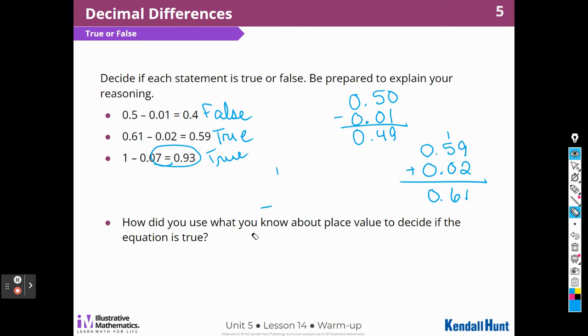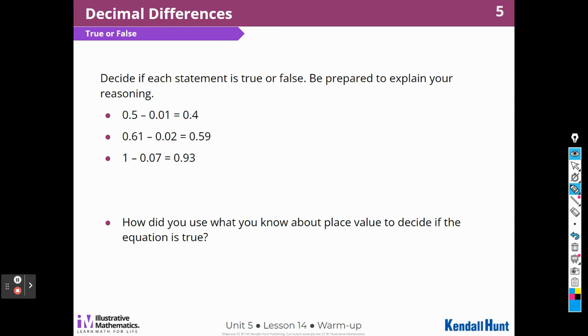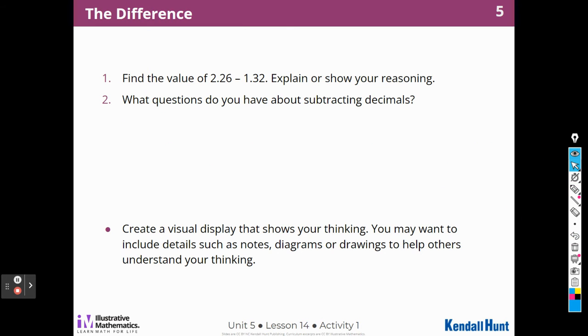How did you use what you know about place value to decide if the equation were true? Well, remember, we used addition, and we had to line up those decimal places. If we did subtraction, again, I still lined up the decimal place. So that's how I used what I already knew about place value. I have to line up the decimal place in order for them to work, to come out right.